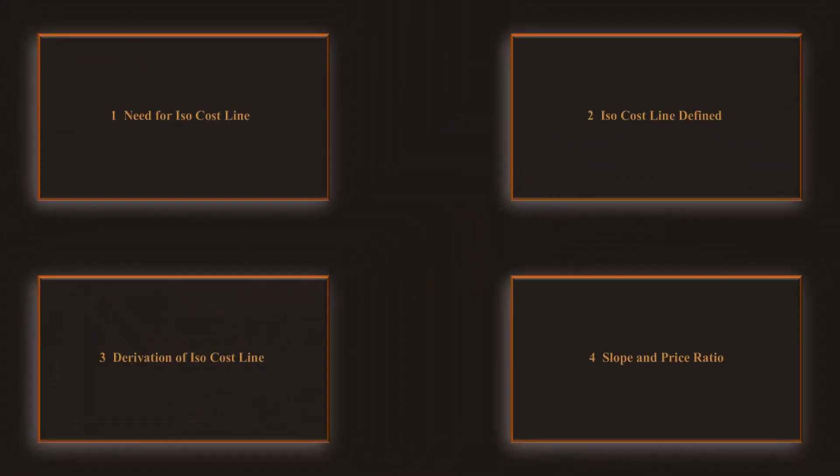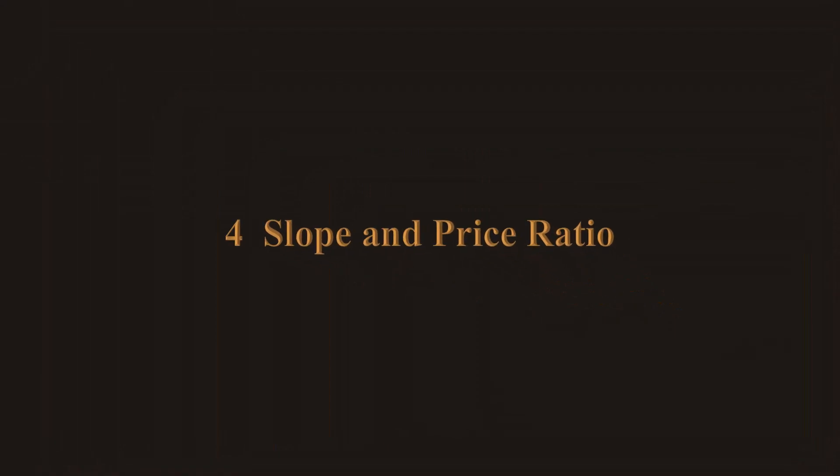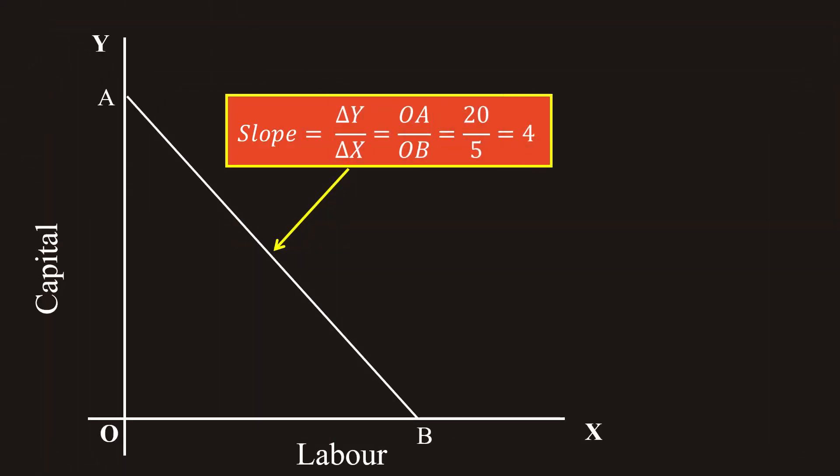4. Slope and price ratio. The slope of a straight line is given by the formula Delta Y by Delta X. Here, Delta Y is OA, Delta X is OB. Then, the slope of the price line is OA by OB. OA is 20 units, OB is 5 units. The slope of the curve is 20 by 5, which is 4.